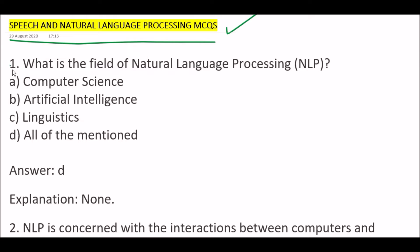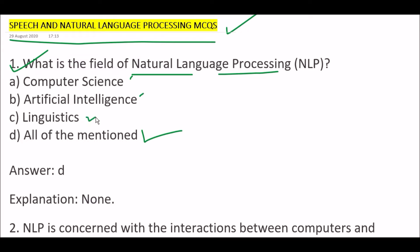Your first question is: what is the field of natural language processing (NLP)? NLP stands for natural language processing. Options are: A) Computer Science, B) Artificial Intelligence, C) Linguistics, D) All of the mentioned. The right answer is option D, all of the mentioned. Computer science is a field of NLP, as well as AI and linguistics are also fields of natural language processing.